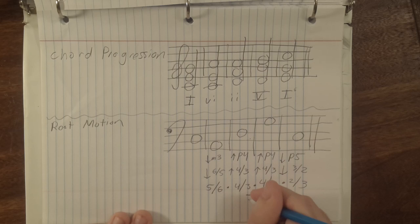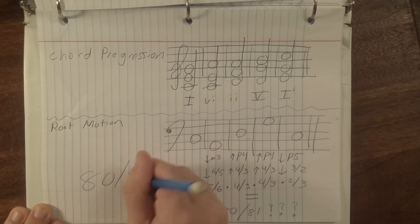Keeping all common tones as unisons, and tuning the chords pure, our final I chord, or tonic, does not arrive back at our original pitch. Instead, it arrives at 80 over 81, about 21 cents below the starting pitch.